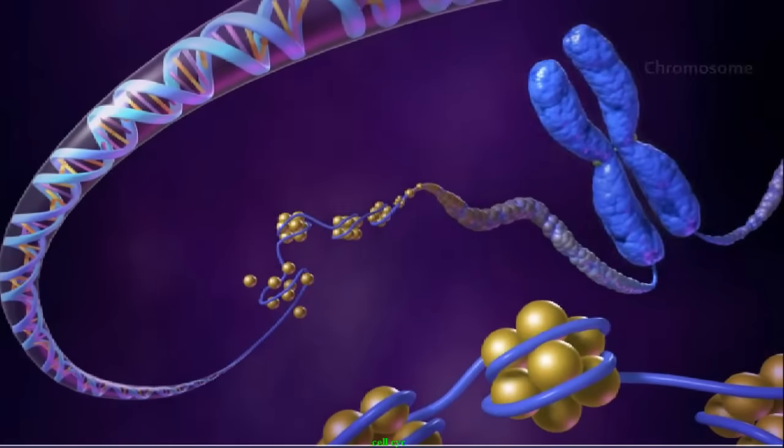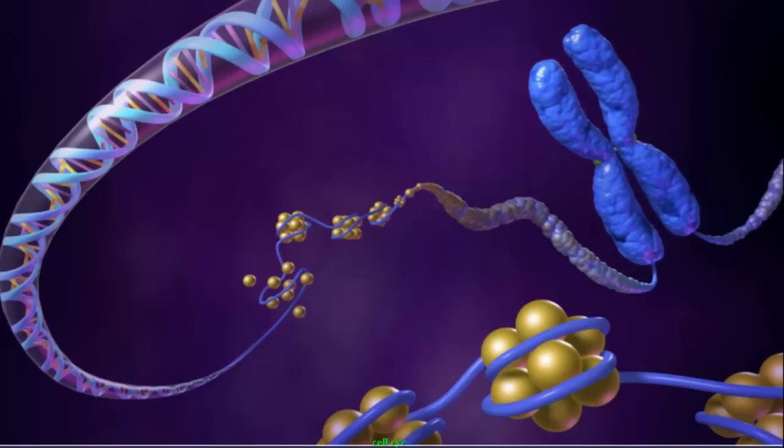Following DNA replication, the chromosomes condense in the nucleus of the cell. DNA condenses by wrapping around cores of histone proteins, forming nucleosomes. This beads-on-a-string structure is called chromatin.